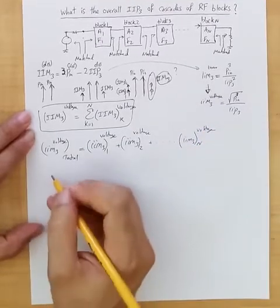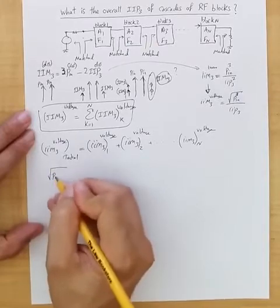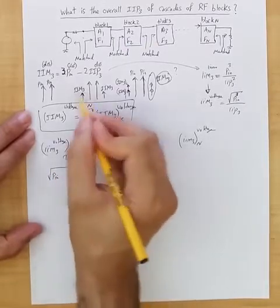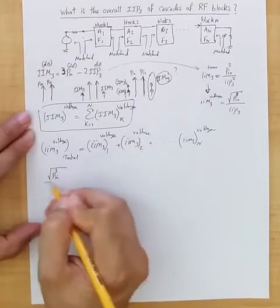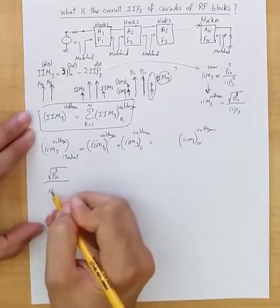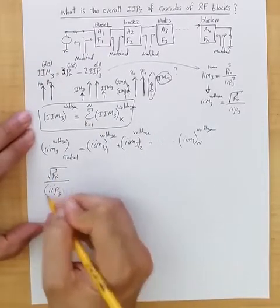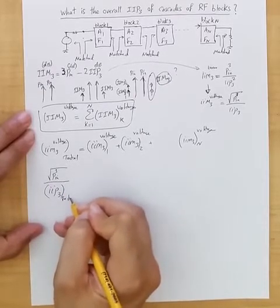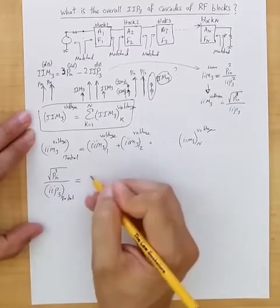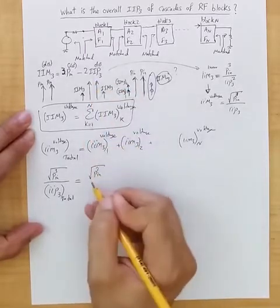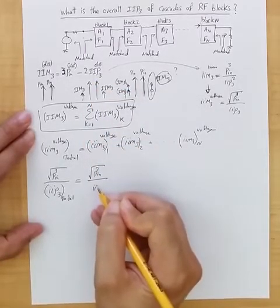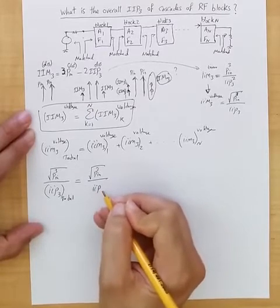So, replacing, it's as if we have Pn for these two tones applied to the very input of the cascade, and we are trying to find an overall IIM3 for the whole cascade, equal to that Pn applied to block 1, which results in this much of an intermod product.